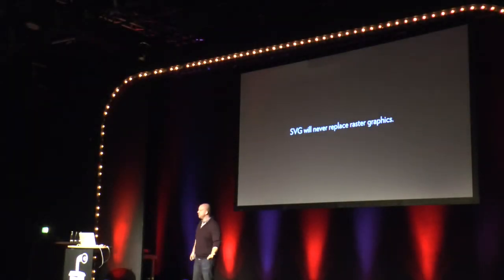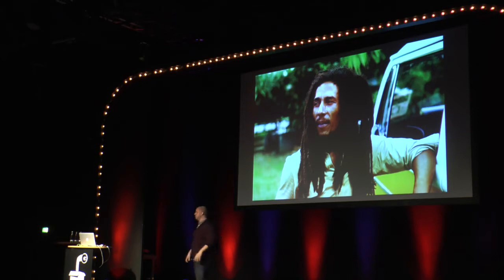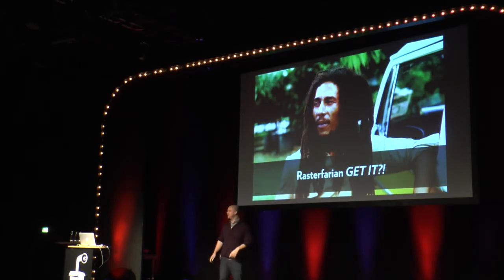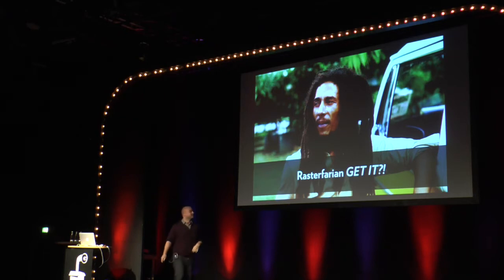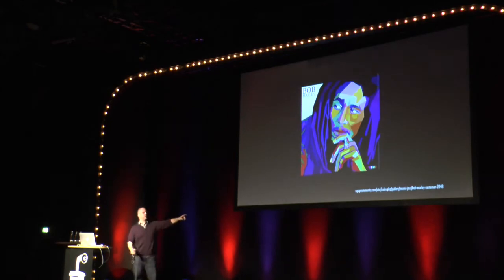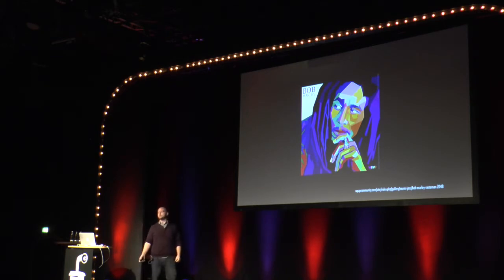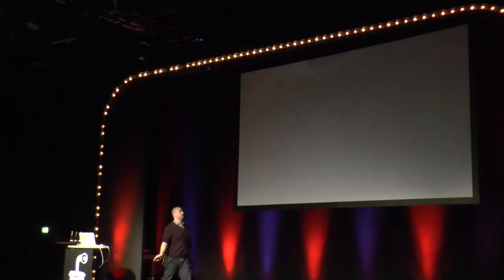It is true that SVG will never replace raster graphics — meaning JPEG, GIF, PNG, whatever — those are grids of pixel data that come off a camera. This picture of Bob Marley is a raster graphic — raster-farian. This vector version of Bob Marley though is tailor made to be SVG. I feel like everybody has a little bit of intuition already on things that are vector versus raster. I found it on the web not as SVG, which is a bummer because it would be clearly a lot more useful as SVG — more scalable, smaller file, sharper.